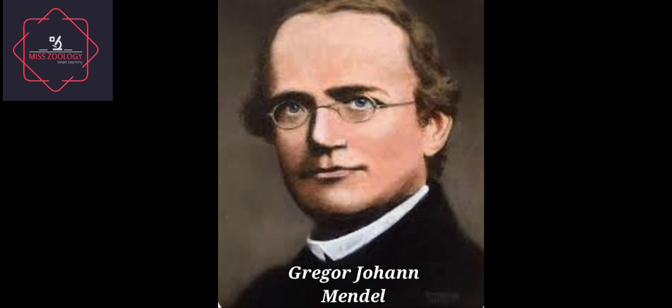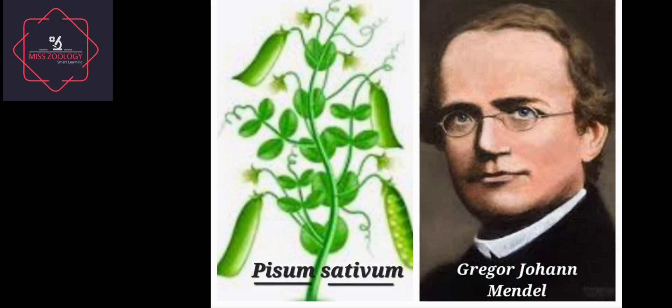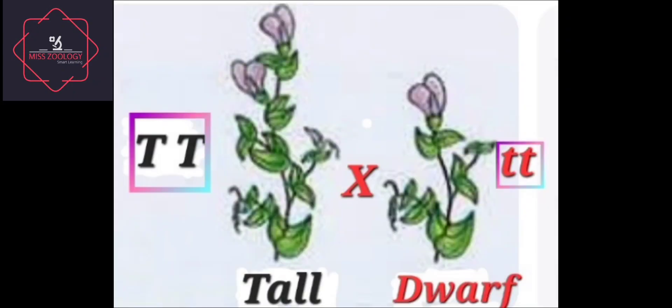He was fortunate that he got all the pure breeds of the pea plants. He started experimenting with the tall pea plant and the dwarf variety. The tall pea plant was a homozygous tall, with both genes for height being for tallness. Similarly, the dwarf plant was also a pure or homozygous dwarf plant, with both genes of the dwarf variety.